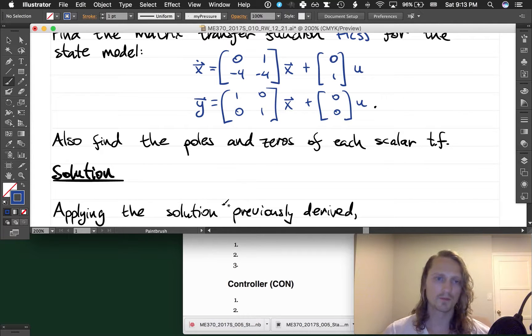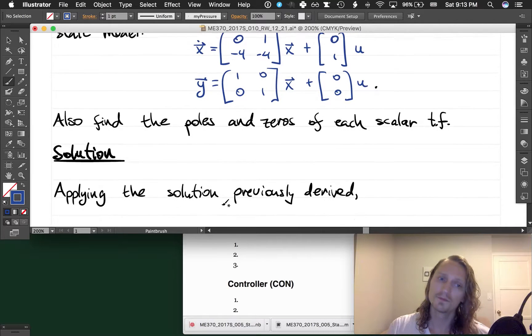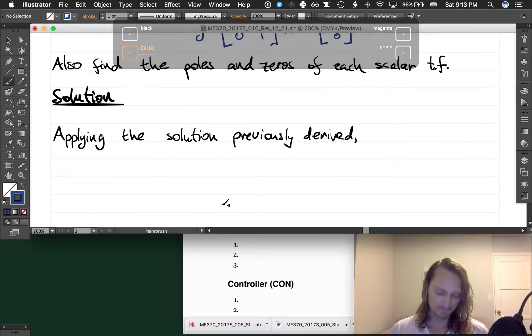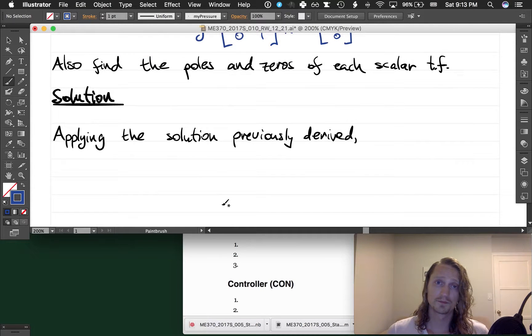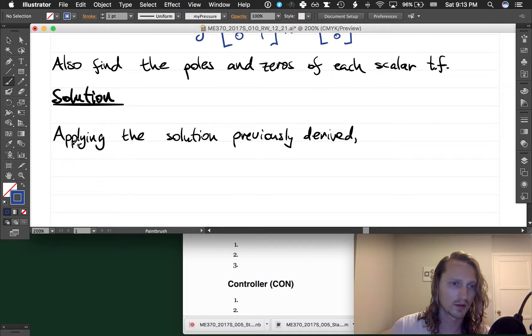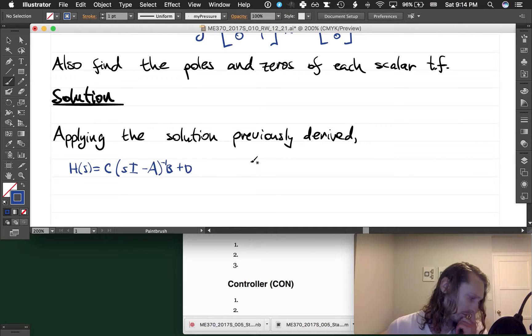So here's the solution. The solution we previously derived for the matrix transfer function is that H(s) is equal to the C matrix times the quantity (sI - A) inverse times B plus the D matrix. So let's plug those matrices in.